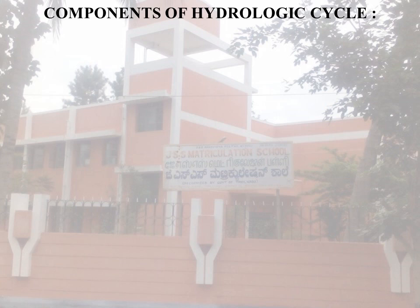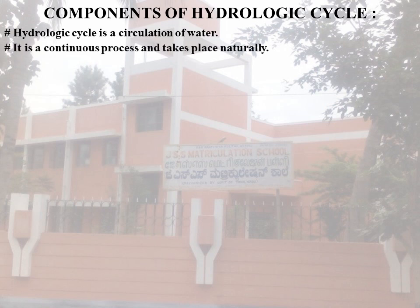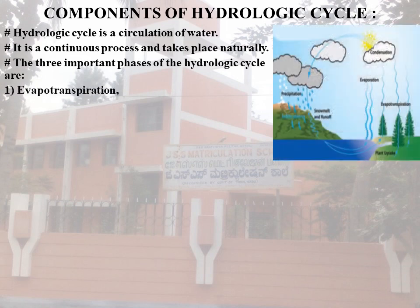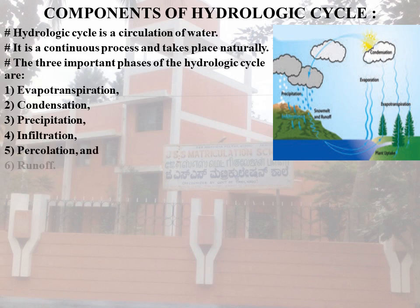The hydrological cycle is a circulation of water. It is a continuous process and takes place naturally. The six important parts of the hydrological cycle are: evapotranspiration, condensation, precipitation, infiltration, percolation, and runoff.